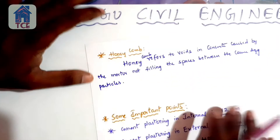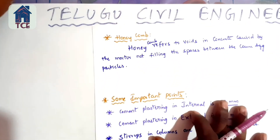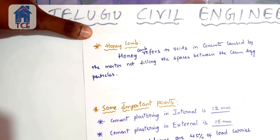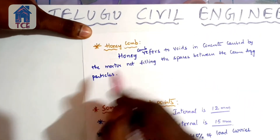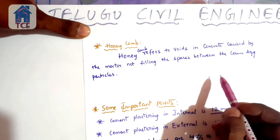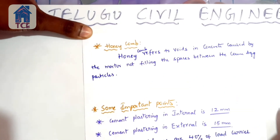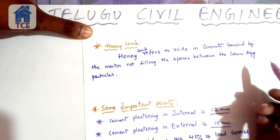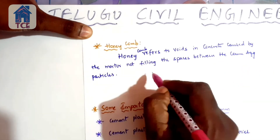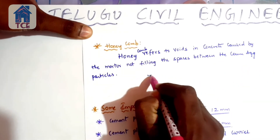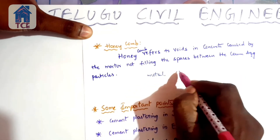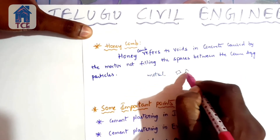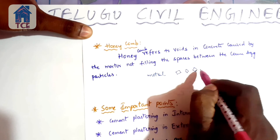The next concept is honeycomb. Honeycomb refers to voids in concrete caused by mortar not filling the spaces between aggregate particles. This is a defect that must be addressed during construction.